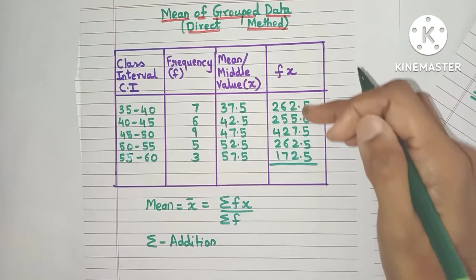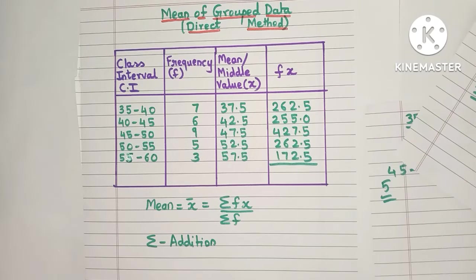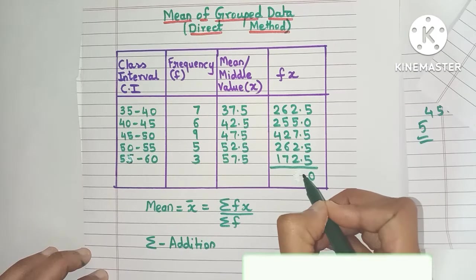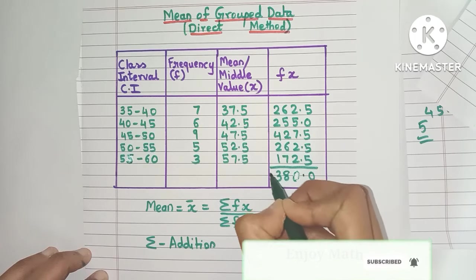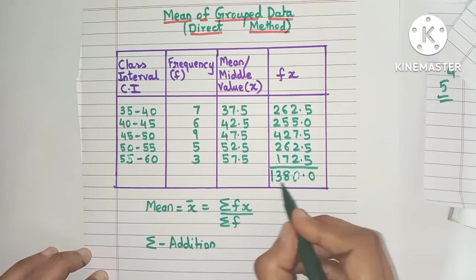Now that you have arranged everything properly, the addition will be very simple. Here we have a 0, a decimal point, 0, 8, 3, and 1. So the addition is 1380.